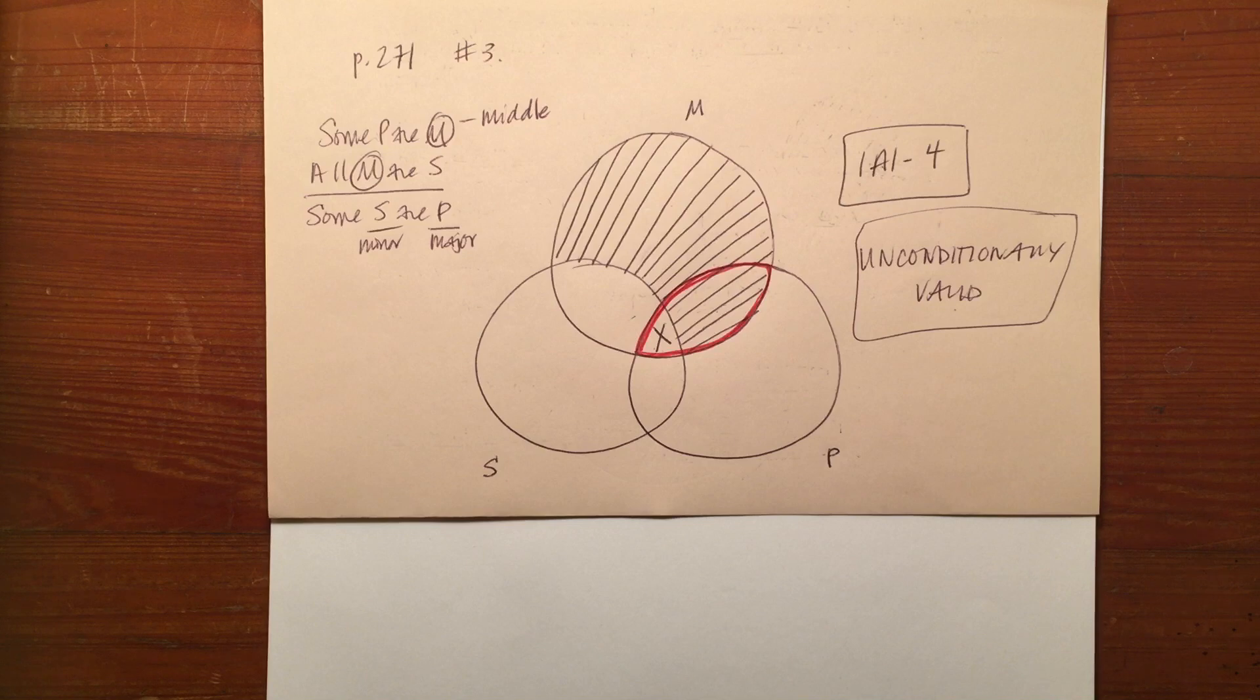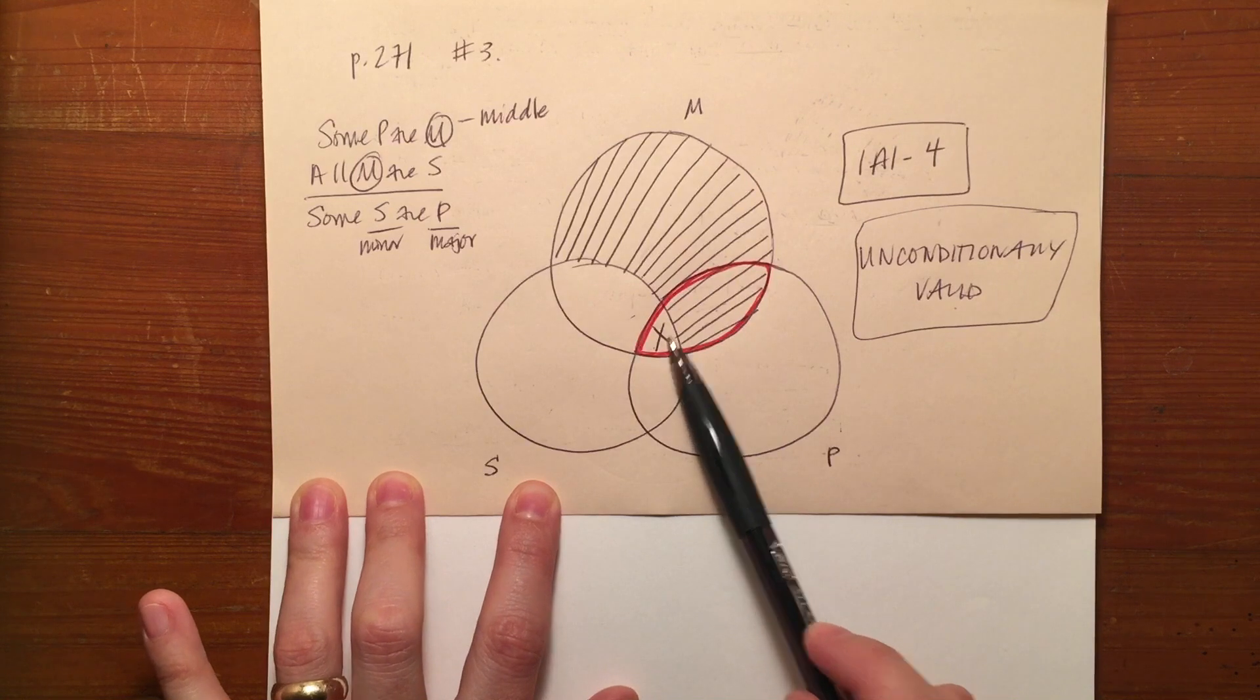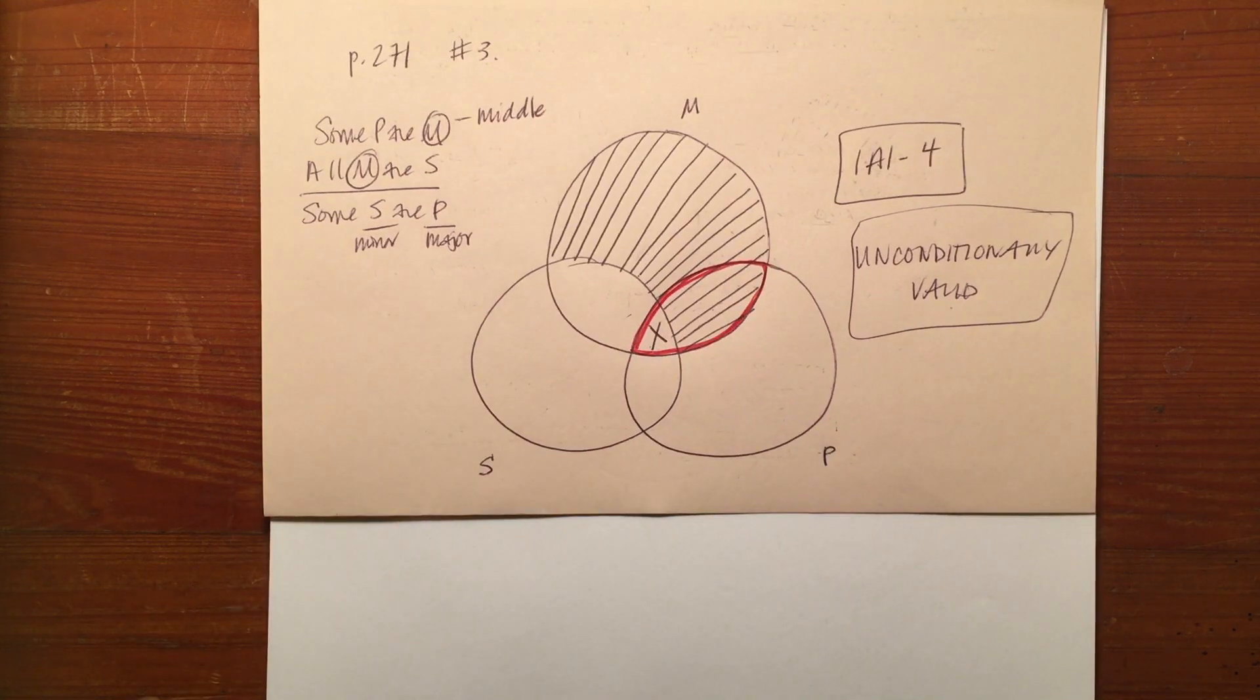We knew that it was unconditionally valid for two reasons. One, because if we look at the conclusion it is contained in the diagram, and two, we can double check that unconditionally valid, conditionally valid, or invalid from both perspectives. We can check our validity by looking at the charts of unconditionally valid forms and conditionally valid forms.